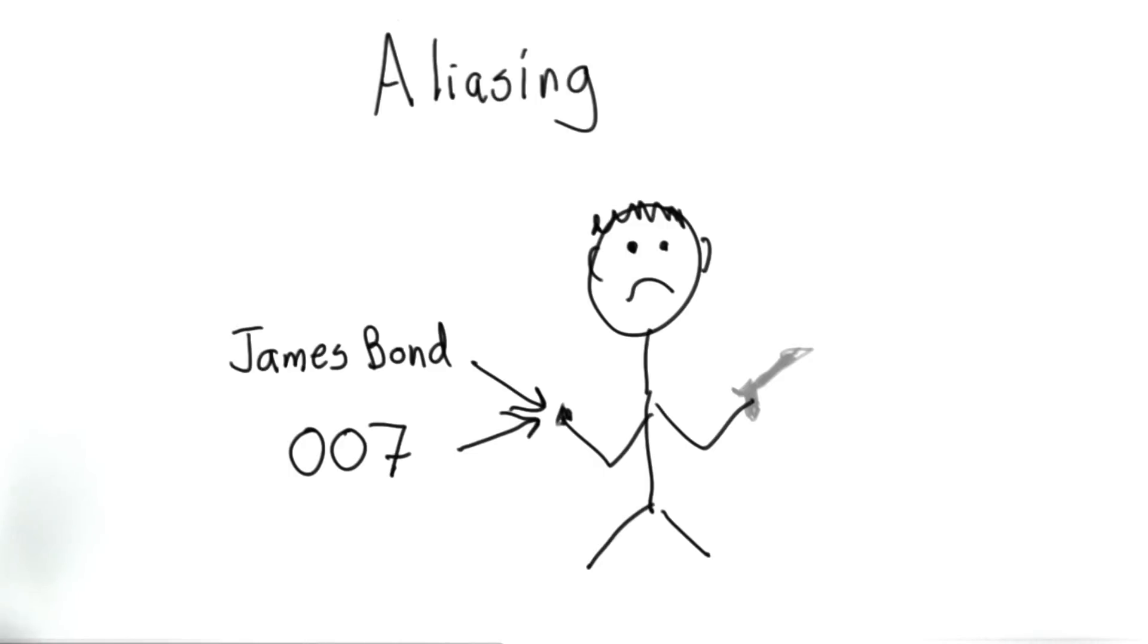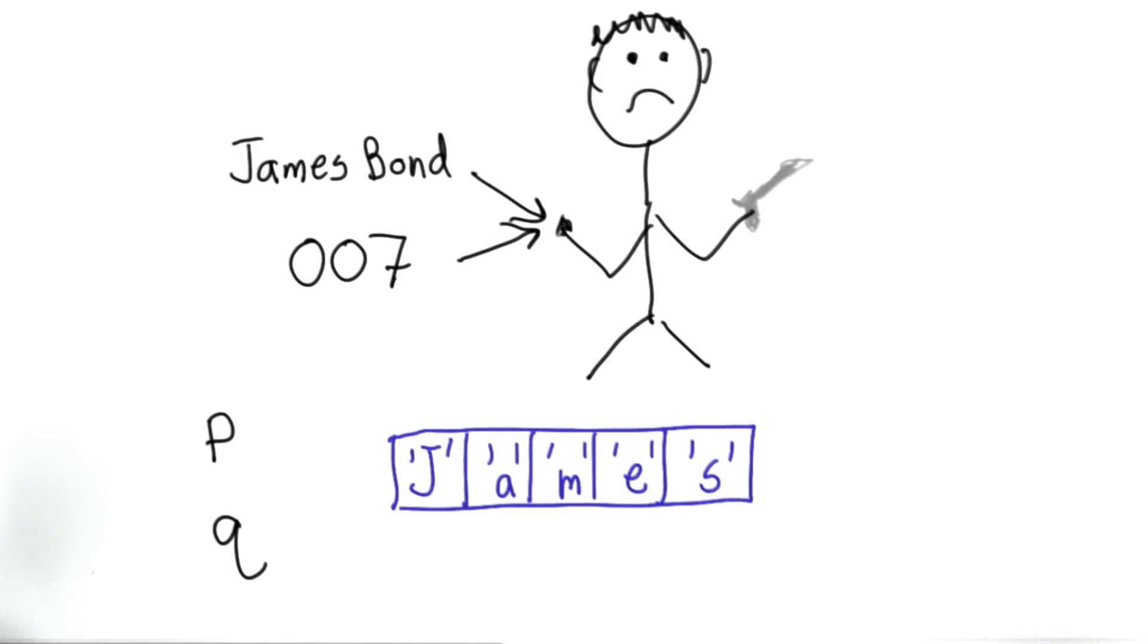Aliasing for variable names has the same property. If we have two variable names that refer to the same object, any change we make to the object P refers to also affects the value that Q refers to.